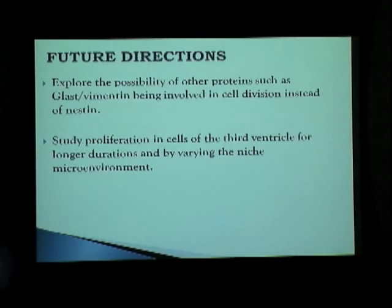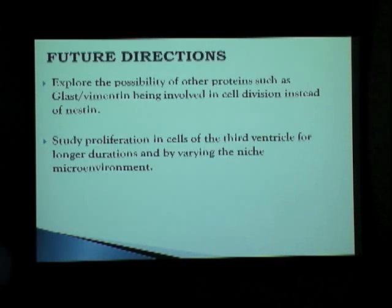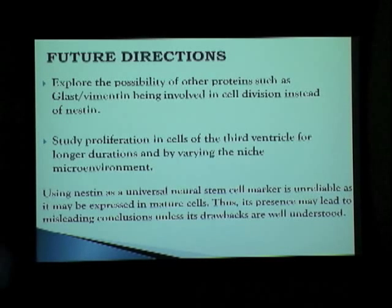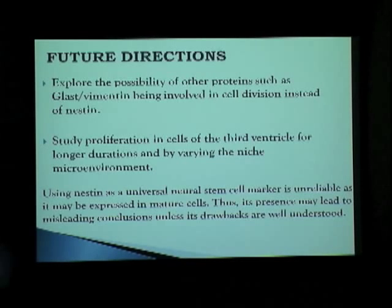I know all that I've told you so far may seem inconclusive — there is no clear-cut hypothesis so far. But there is one thing for sure: nestin is currently being expressed in mature cells, or cells that are not dividing rapidly. Which means that using it as a universal stem cell marker is slightly off the mark, because we might get misleading results. It's important to realize that nestin may not always be present only in stem cells — it may be present in other areas also.